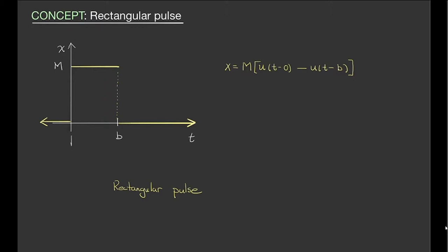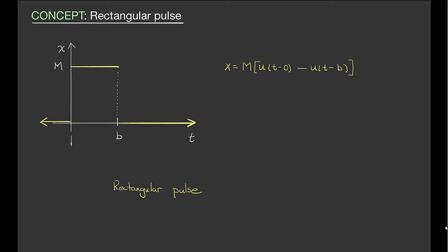Now it's a rectangular pulse for obvious reasons — because it's a rectangle. You can have other types of pulses: you could have a triangular one where you're zero for a while, spike up and then back. You could also have a pulse where you're zero for a while and then be cosine and then go back. This is maybe something that looks more akin to a heartbeat.